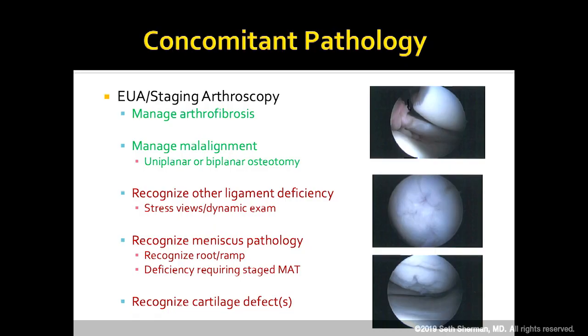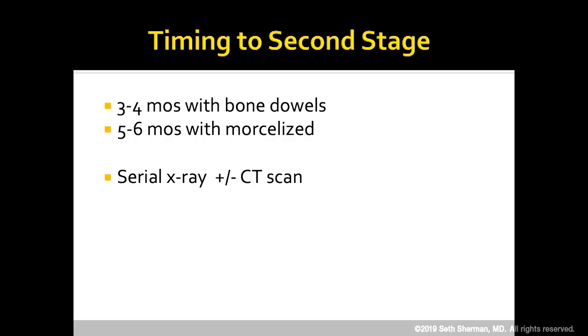In closing, for two-stage revisions: treat concomitant pathology, particularly arthrofibrosis — get motion back. Manage malalignment with osteotomy at the time of tunnels. Use this opportunity for a thorough exam under anesthesia and stress imaging so you don't miss a concomitant corner. Ligament, meniscus, and cartilage procedures are typically done as part of the intra-articular work in the second stage. If using bone dowels, you can consider advancing to the second stage faster versus morselized graft, but still obtain at least x-ray and probably CT scan before proceeding.